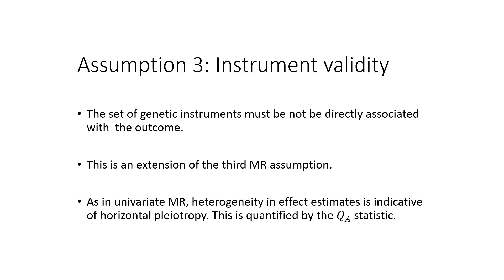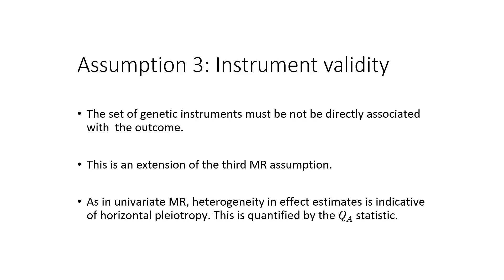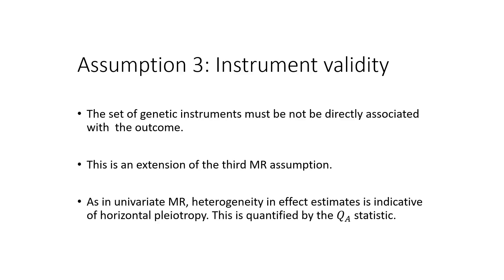As in the univariate MR case, heterogeneity in effect estimates is indicative of horizontal pleiotropy, but in the multivariable MR setting, this pleiotropy is quantified by the QA statistic, which is a further modification of Cochrane's Q. So in contrast to the QX statistic, we would want the QA statistic to be small, indicating a lack of substantial pleiotropic effects. We will also require covariance matrices of the estimated effects of each genetic variant on each of the exposures to arrive at accurate estimates of QA.